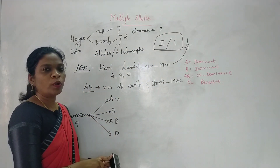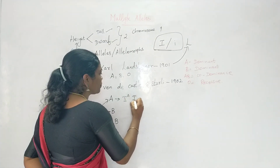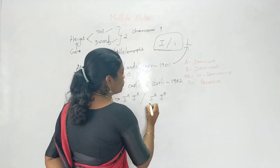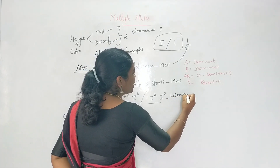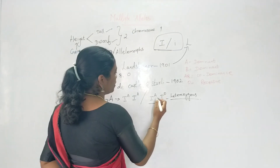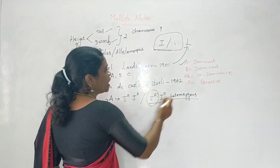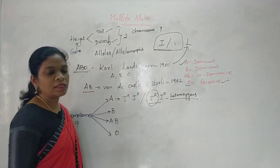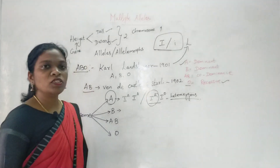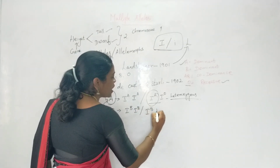The genotype to represent blood group A is written as I^A I^A (homozygous) or I^A i^o (heterozygous). Since blood group A is dominant and O is recessive, the recessive cannot be expressed, so blood group A is expressed. The genotype for blood group B is I^B I^B or I^B i^o.